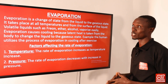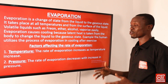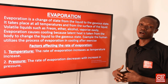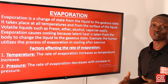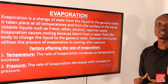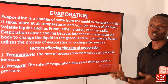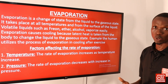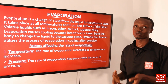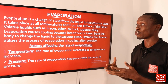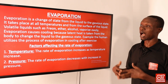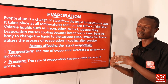We are starting with the simple meaning of evaporation. Evaporation is a change of state from the liquid to the gaseous state, and it takes place at all temperatures and from the surface of the liquid. Some liquids evaporate easily and are referred to as volatile liquids, which can be high volatile or low volatile. Those that vaporize easily are referred to as high volatile liquids, and examples include freon, ether, and alcohol.